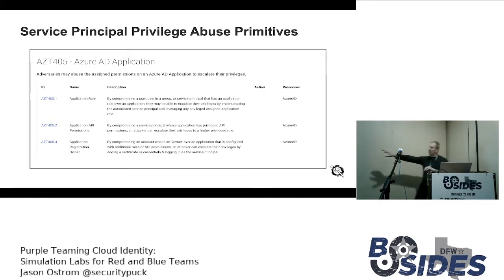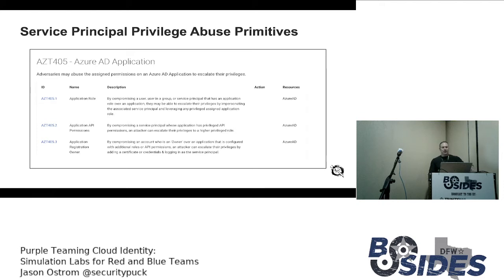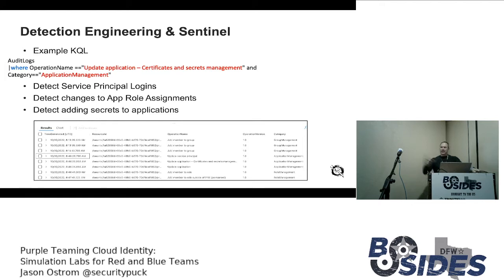For Sentinel detections, we can use Kusto Query Language to query sign-in logs and detect when password spraying is happening. This is another Azure Threat Research Matrix entry: service principle privilege abuse, where an attacker elevates privileges and assigns roles in an unauthorized way. We can use the Azure audit logs to detect this. All of this can be done automated — you can use Purple Cloud to stand this up and run these attacks, then map the KQL queries to understand the attack behavior.